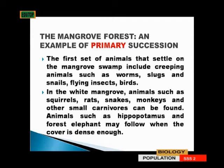The first set of animals that settle in the mangrove swamp include creeping animals such as worms, slugs, snails, flying insects, and birds. Those are the first inhabitant animals that we have in that place.